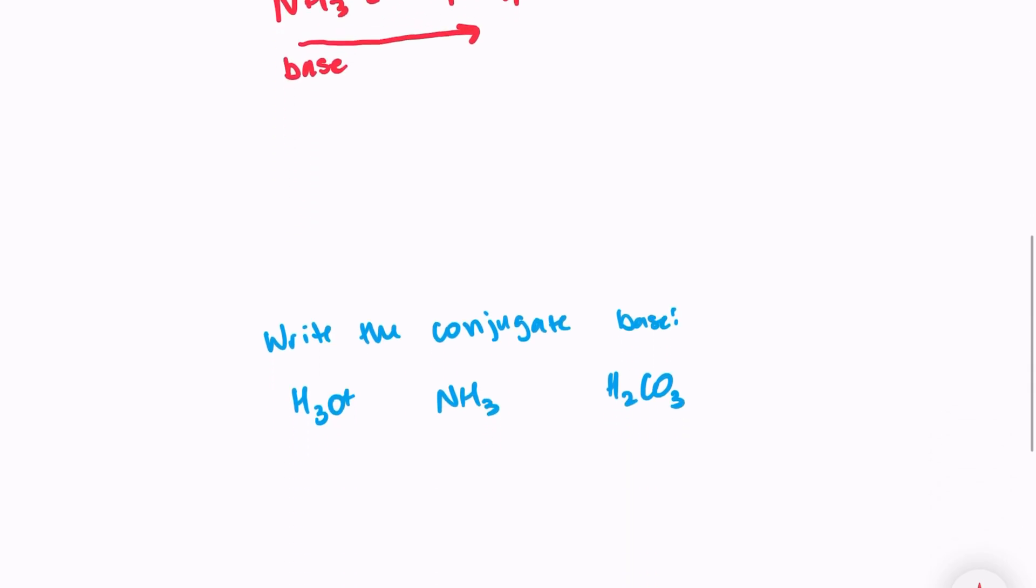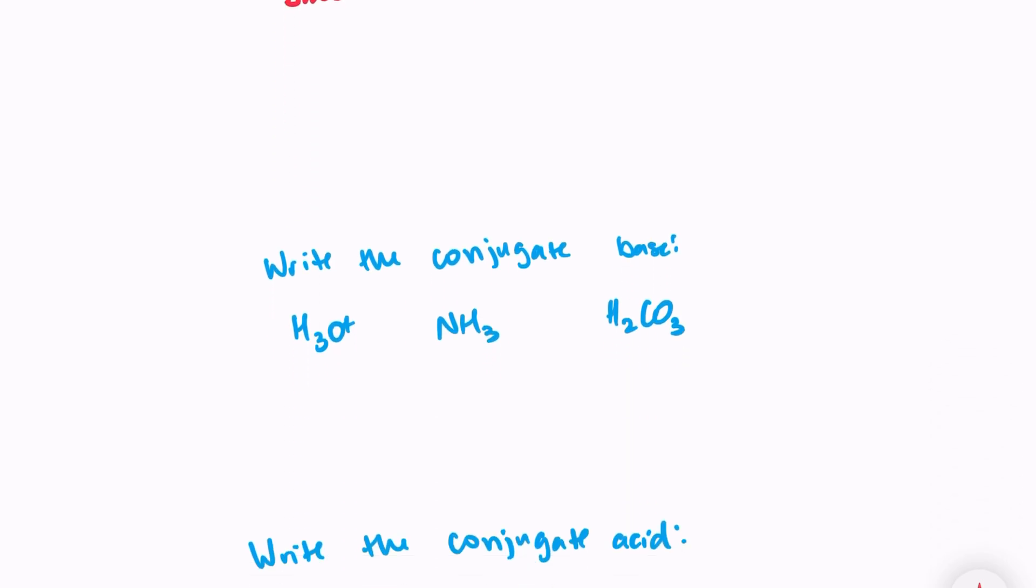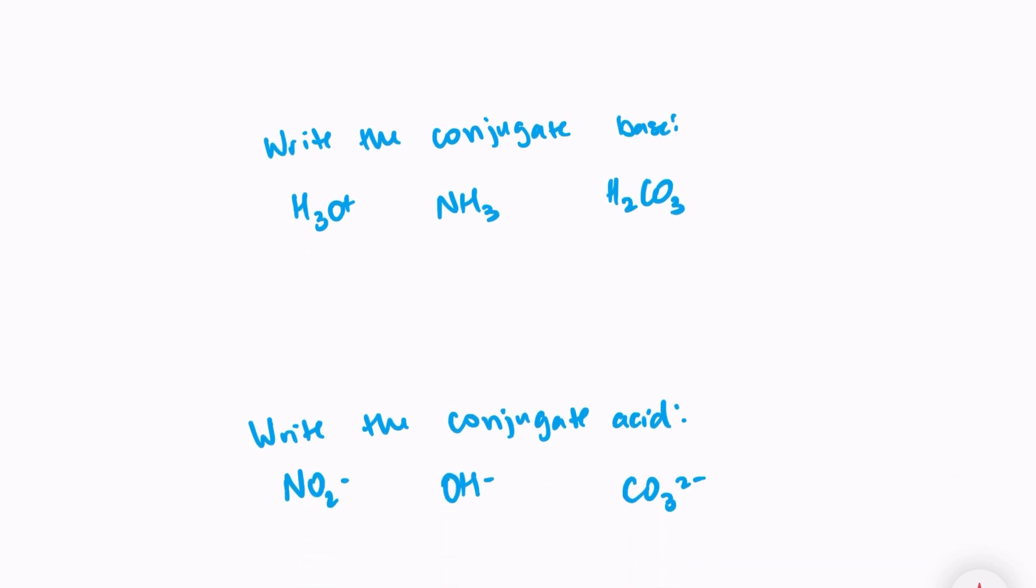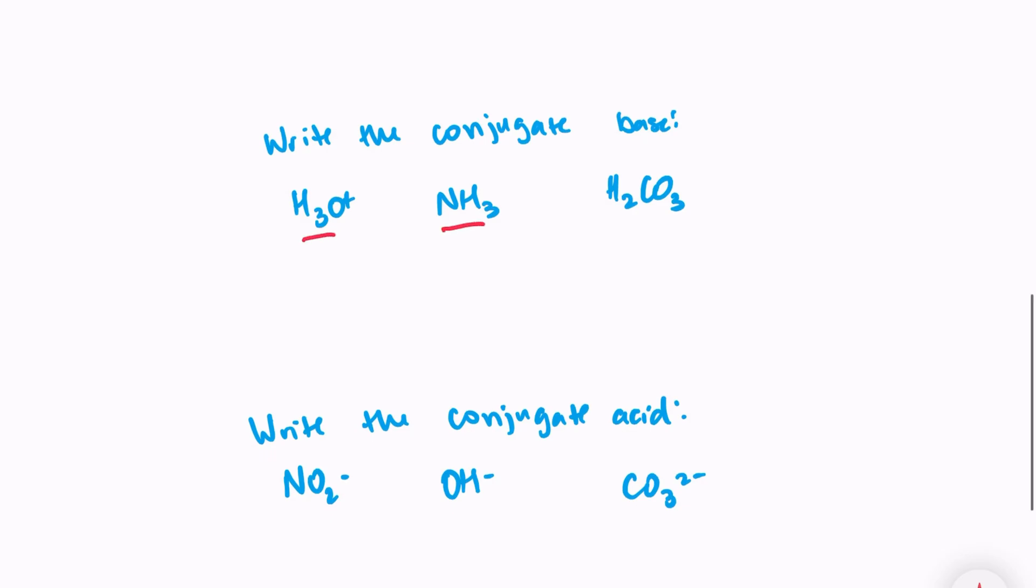Let's look at some examples of some questions that you need to know how to answer. So this first one says, write the conjugate base of the following formulas. So we have H3O+, NH3, and H2CO3. And it's telling me to write the conjugate base. Write the conjugate base. So that means that all of these are going to be acids. This is an acid, acid, acid. And remember, an acid will give an H+. And remember that acid and base conjugate pairs are only different by one proton.